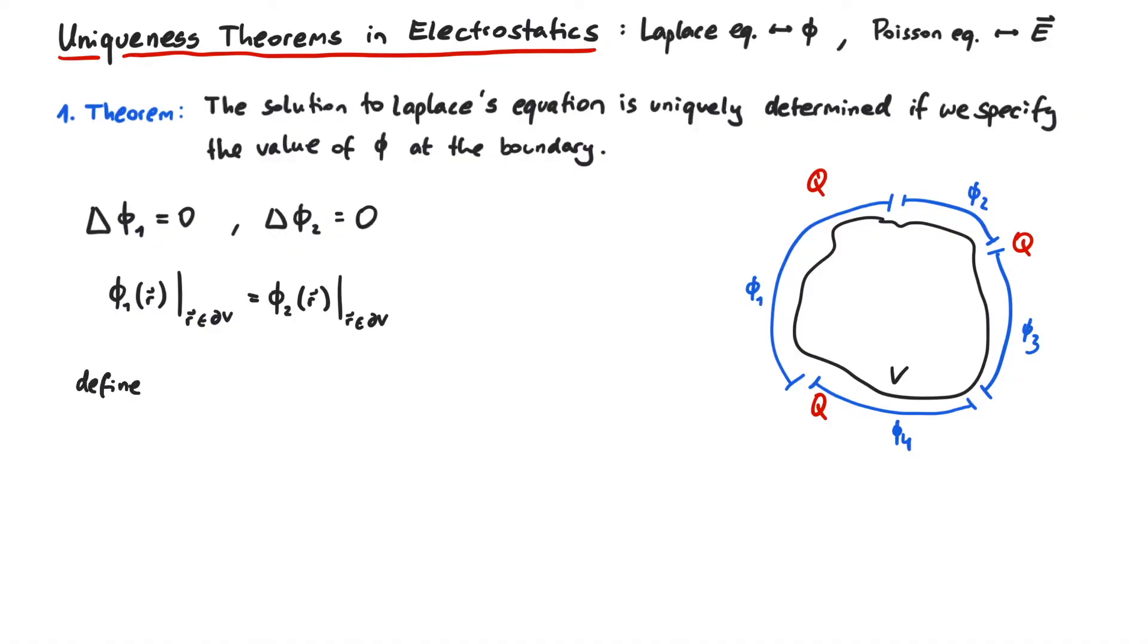Now we define a new potential, phi3, as the difference between phi1 and phi2.